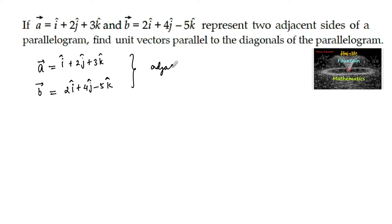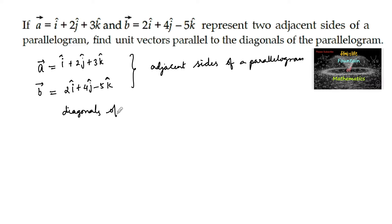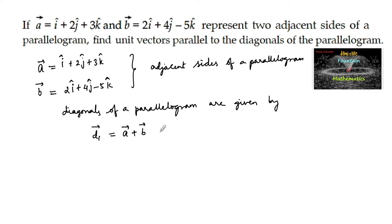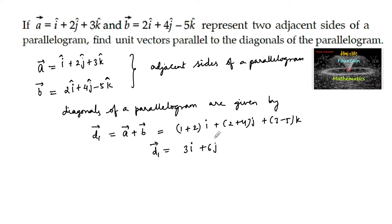Since these are the adjacent sides of the parallelogram, the diagonals are given by: diagonal d1 is equal to a plus b, where a and b are adjacent side vectors. So d1 equals 1 plus 2 of i, plus 2 plus 4 of j, plus 3 minus 5 of k, which equals 3i plus 6j minus 2k.